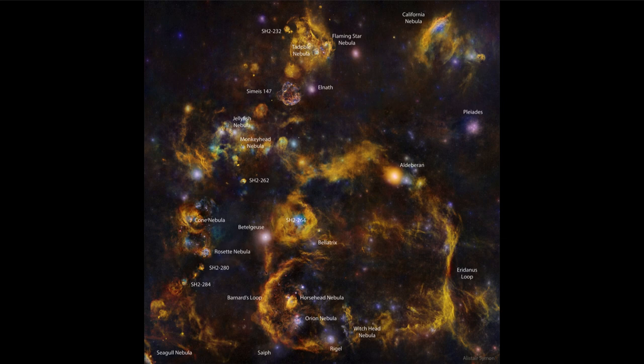Many of these are what we call emission nebulae. Emission nebulae are generally around star-forming regions where hot stars have formed. Those stars emit a lot of ultraviolet radiation, which excites the gases around them and causes them to glow. This whole area is a big region of star formation, which is why we see all these nebulae here.